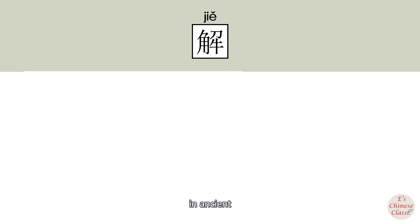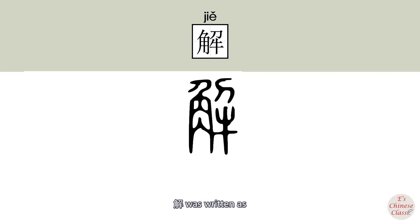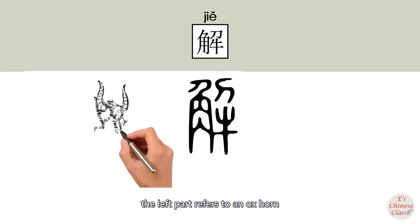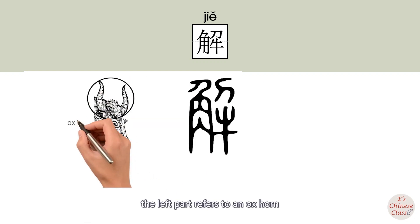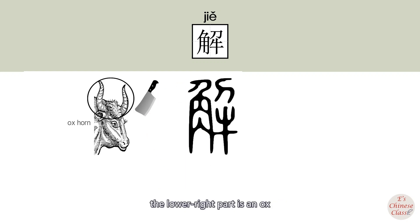In ancient script, 解 was written with three components: the left part refers to an ox horn, the upper right part refers to a knife, and the lower right part is an ox.